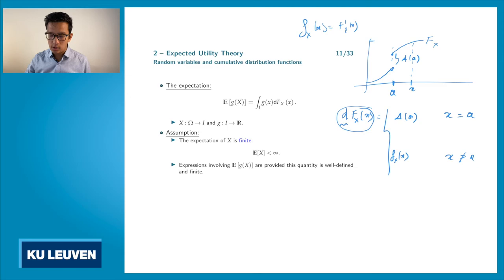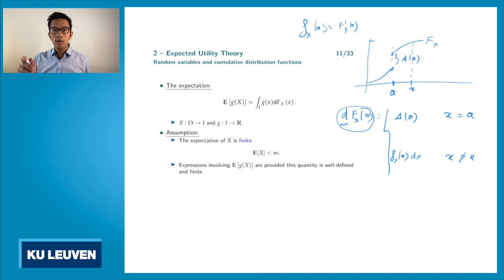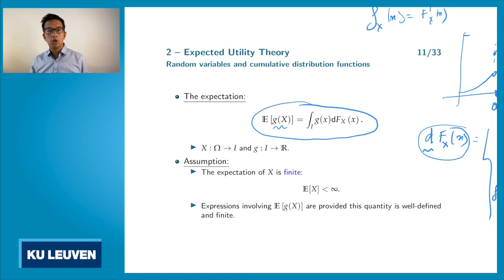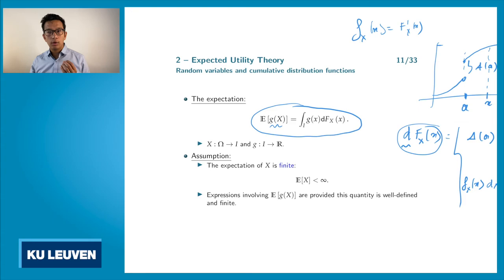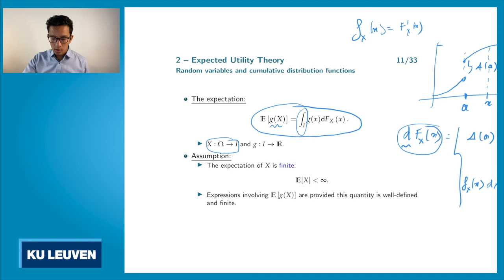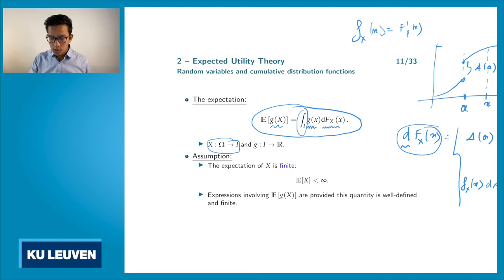In that case, we define dF_X(x) as the derivative — small f — times dx. With this definition of dF_X, we can define the expectation of g(X) — the expectation of a function g applied on the random variable X. Because the random variable takes values in I, we integrate over all possible values of the random variable. Each value is transformed by the function g, and weighted by dF_X, which represents the probability that the random variable X takes the value small x.